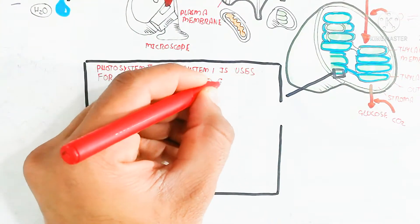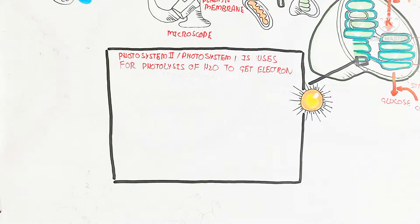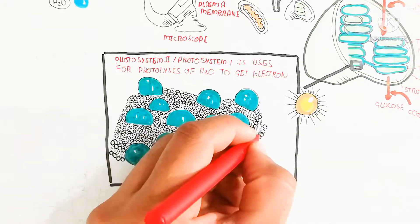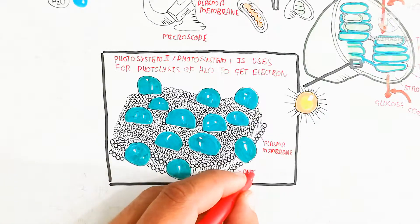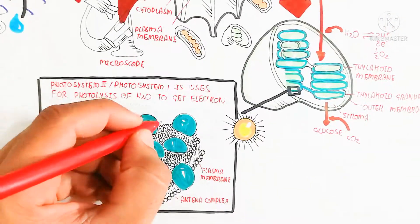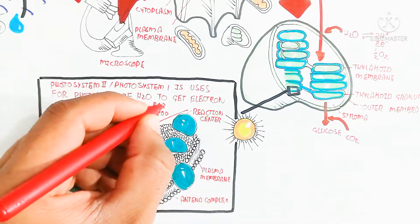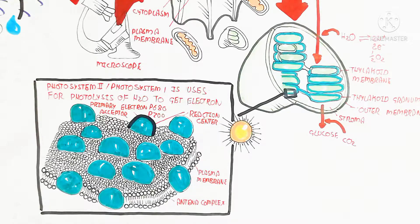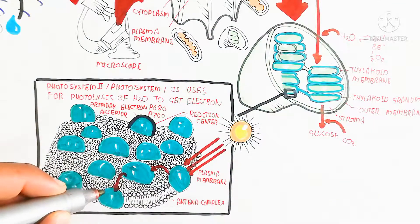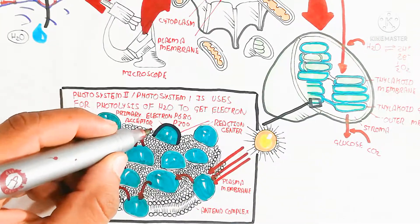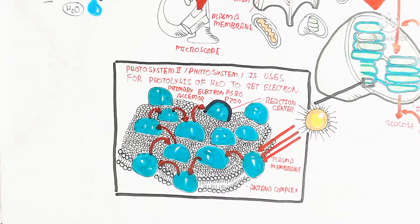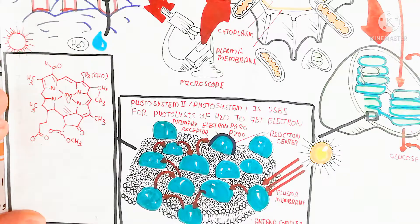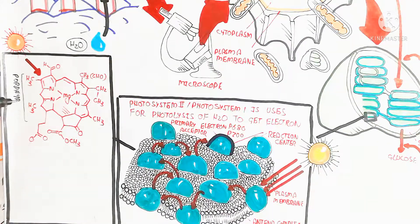Chlorophyll is present in the thylakoid membrane, which contains photosystems. Photosystem 2 and photosystem 1 — photosystem 2 is used for photolysis of water to get electrons, and this is where the primary electron acceptor is present. The thylakoid membrane is a bilayer of phospholipid embedding intrinsic proteins and the antenna complex. It contains photons using wavelengths 700 and 680 nm for photosystem 1 and 2 respectively, which use light to move electrons and excite the reaction center, transferring energy to photosystem 1.